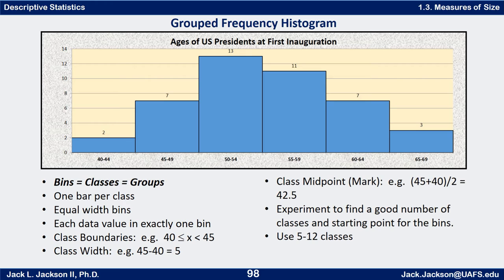You might want to experiment to find a good number of classes and a good starting point for the bins — usually aiming for somewhere between 5 to 12 classes. Some of this is a little bit of trial and error to see what would work best. So in this video we looked at stem and leaf plots and dot plots — two good ways of looking at data.